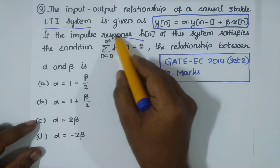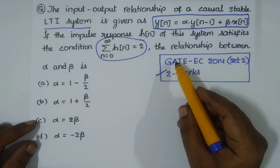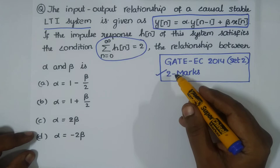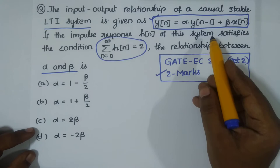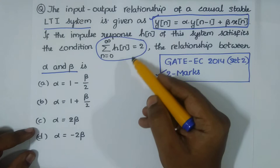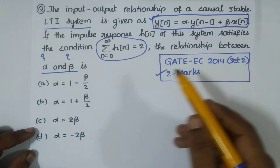Condition-based questions are common in the GATE examination, but there is no big deal — just focus, it is very easy. We need to solve for the relationship between α and β. These are defined in the system, and based on the given condition, we must find α and β.